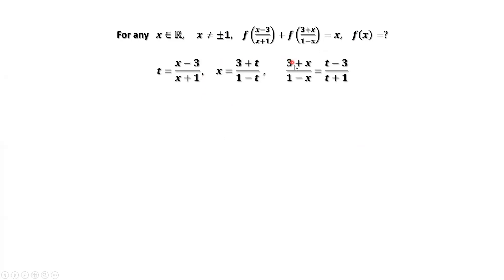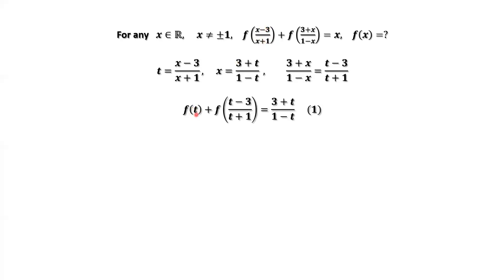Here we have the three results. In this formula, we replace all x in terms of t. The first part as we defined is t, that's f of t. And (3 plus x) over (1 minus x) equals (t minus 3) over (t plus 1). The right-hand side x equals (3 plus t) over (1 minus t). This is the first result.